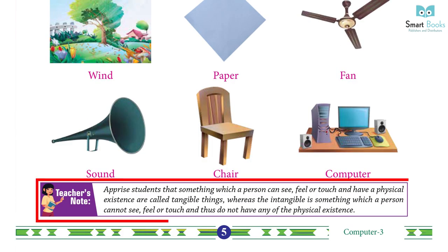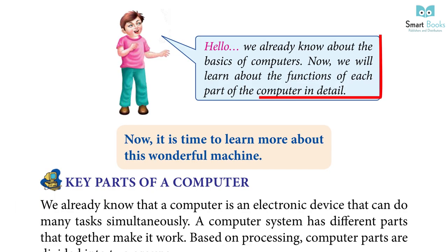Teacher's note: Apprise students that something which a person can see, feel or touch and has a physical existence is called a tangible thing. Whereas, something which a person cannot see, feel or touch and thus does not have any physical existence is called intangible.